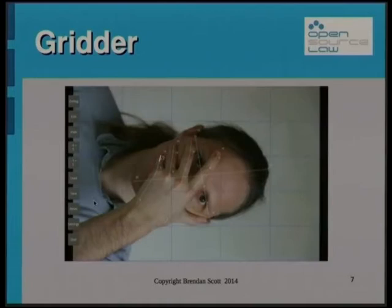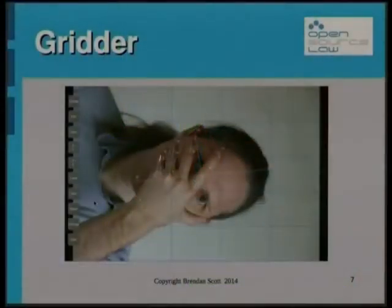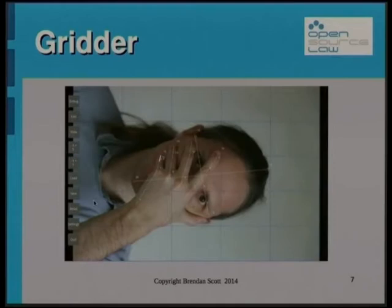This is the first application I actually wrote wholly within Kivy. The purpose of the application is to take a photo and grid it so you can freehand draw the photo. The thing about this application is that you get pinch zoom, scale, translate, and rotate all for free by using a widget called the scatter widget. Everything you can see is floating on top of this scatter widget, which means I can just pinch it, zoom it, and move it around — for basically no coding.